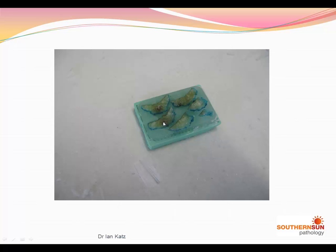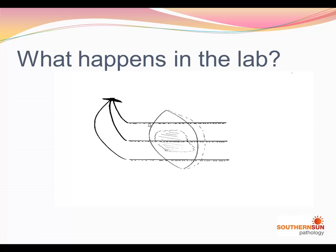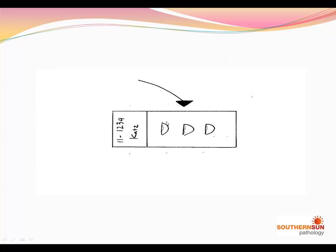In other words, this is an ellipse of skin with a lesion on the surface. We bread-loaf it, and then we microtome a very thin section — about 5 microns — off the surface of each section, whether it's in one cassette or multiple cassettes. These sections are then placed on a slide with the patient's name and lab excision number.